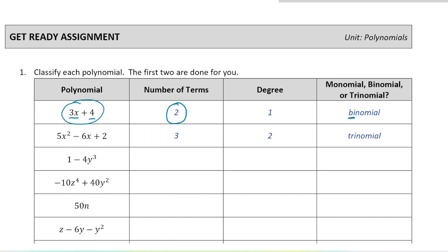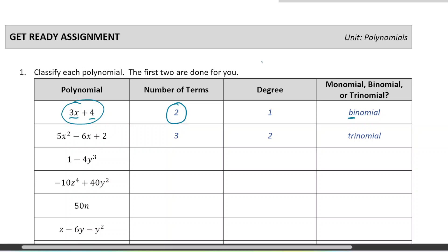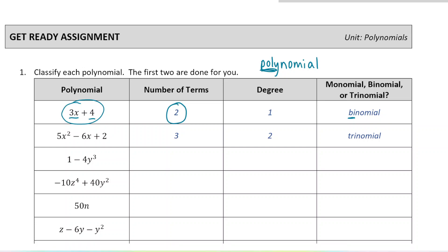The prefix 'bi,' just like in bicycle where there are two wheels, means two — so binomial. The word polynomial: the prefix 'poly' means many, so polynomial is more of a general term to describe any of these. And then if we're specifically saying binomial, it means it has two terms.